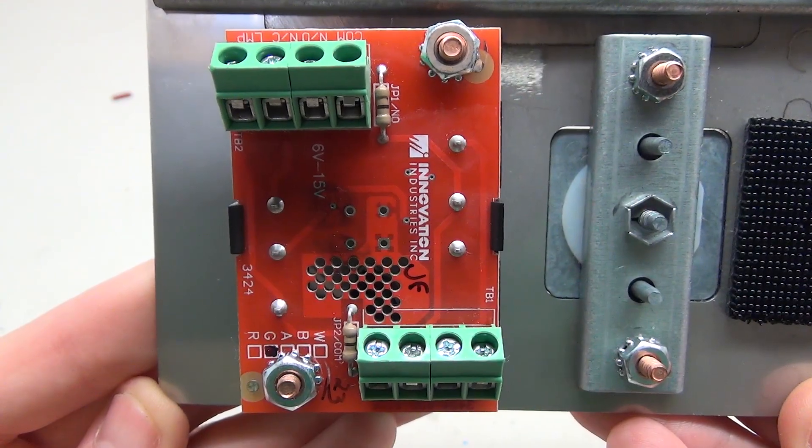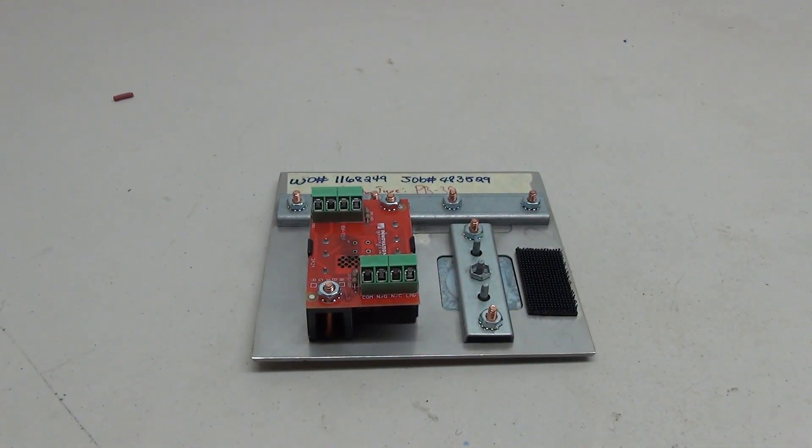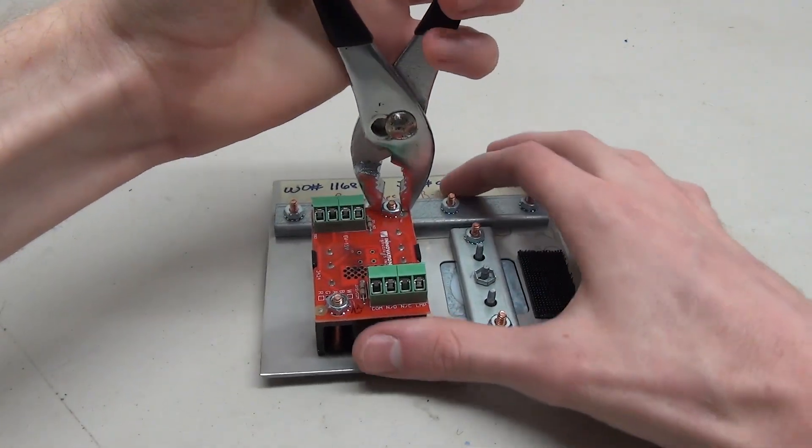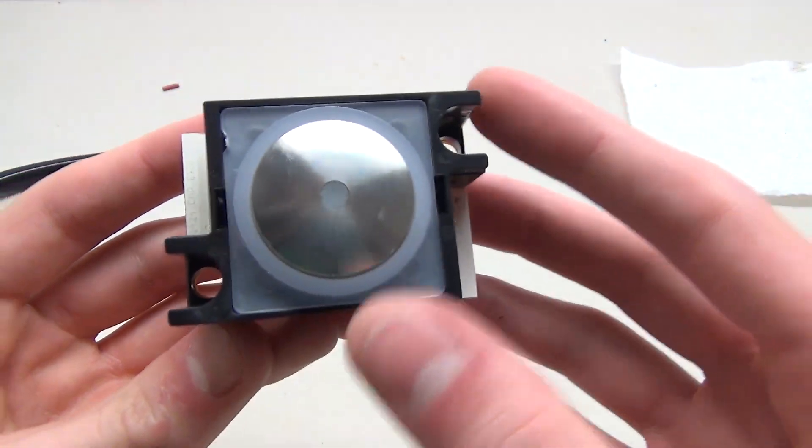Now let's go ahead and take this button completely apart and see how it works. In order to do that we need to take the button off by removing these two nuts on either side of the board. And here's what the button looks like outside of the panel.